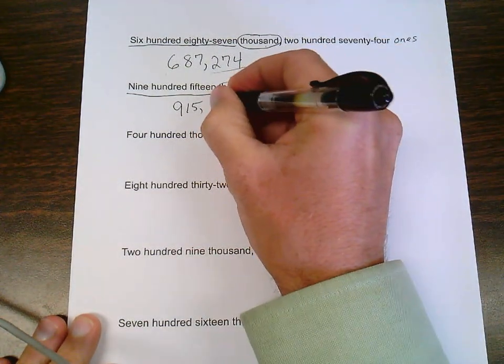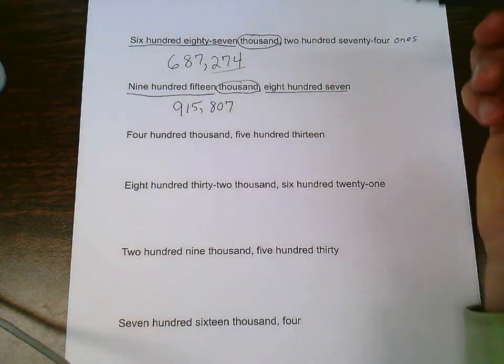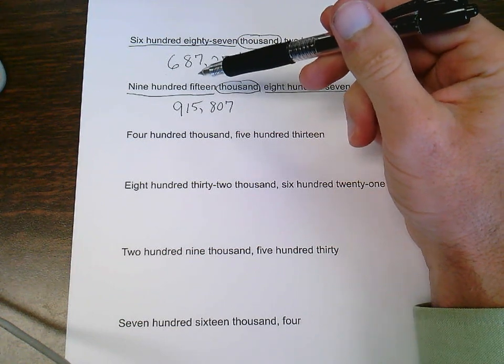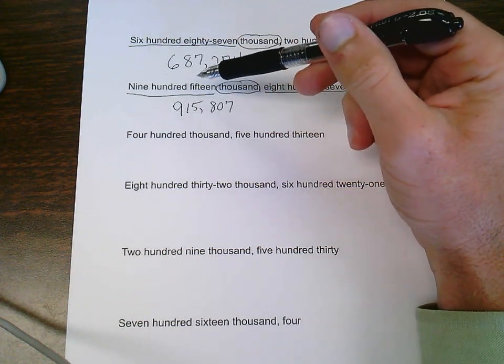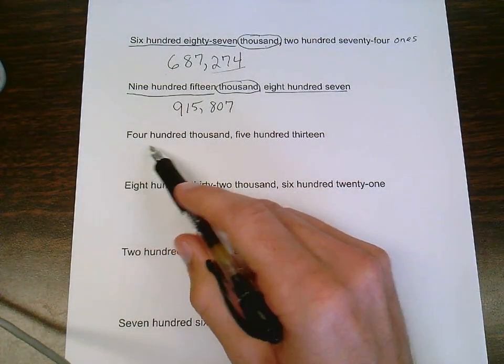So 807. So essentially, if you can do a three-digit word form to number form, you can do this just as easy. Next one, 400,513.